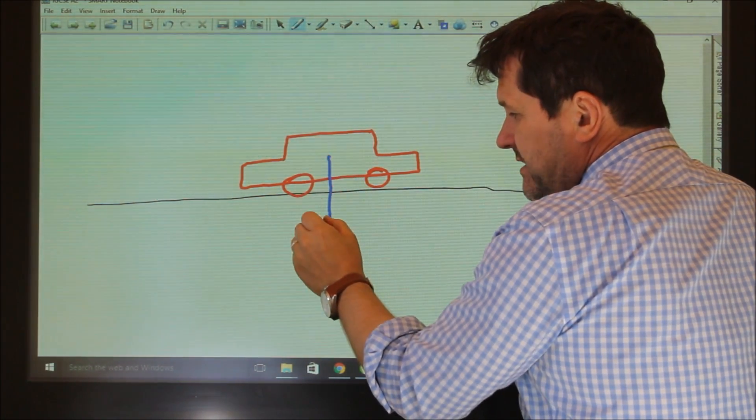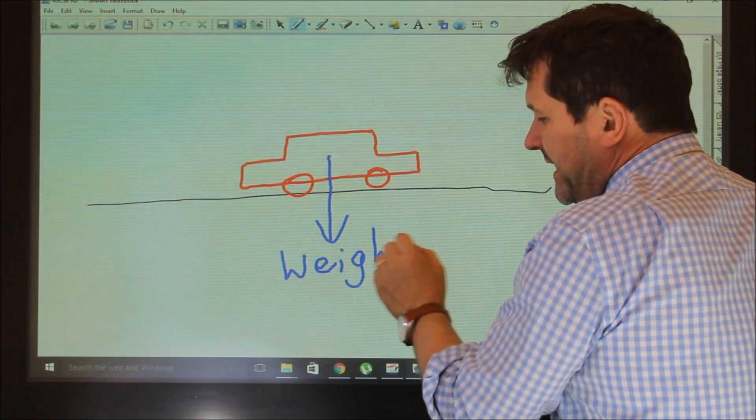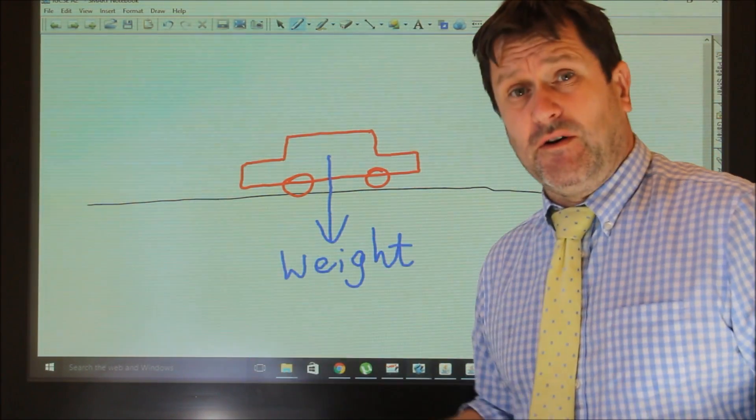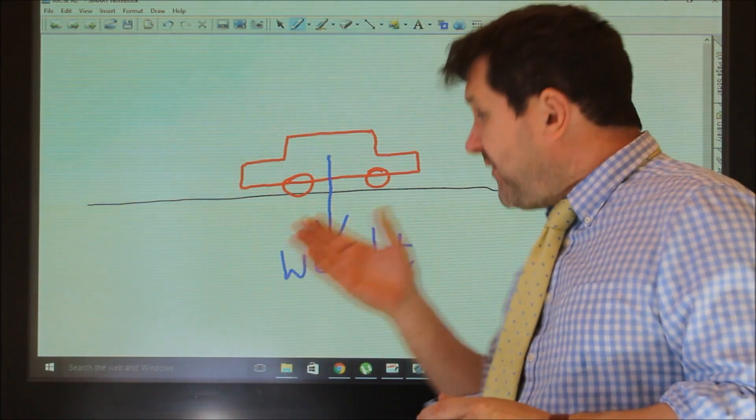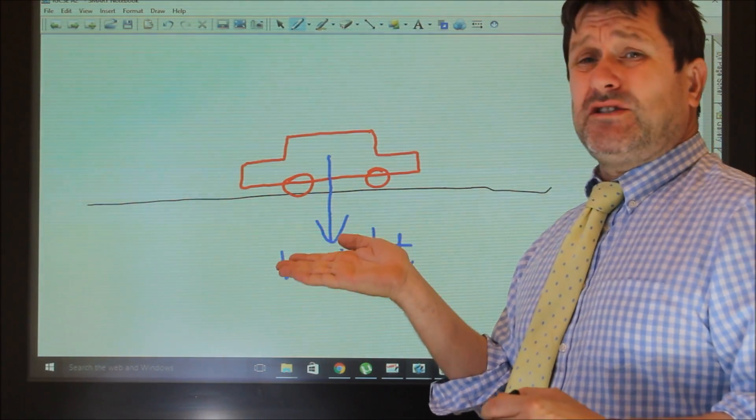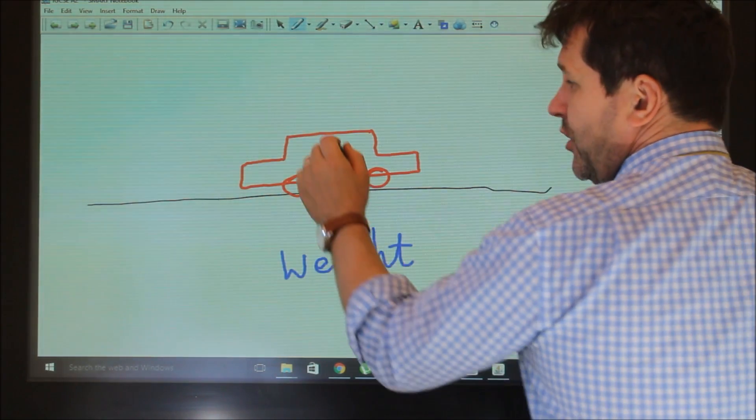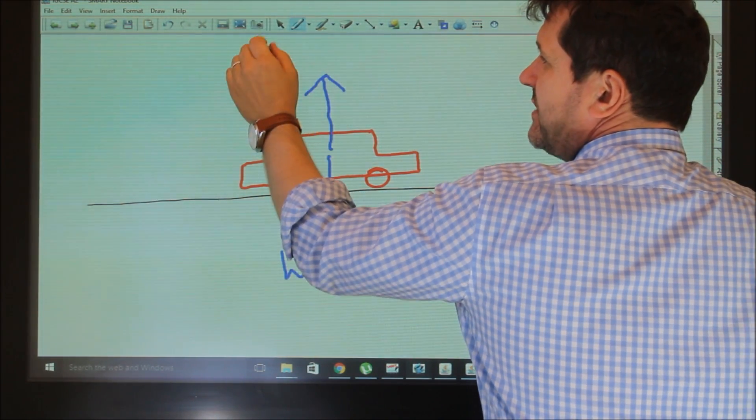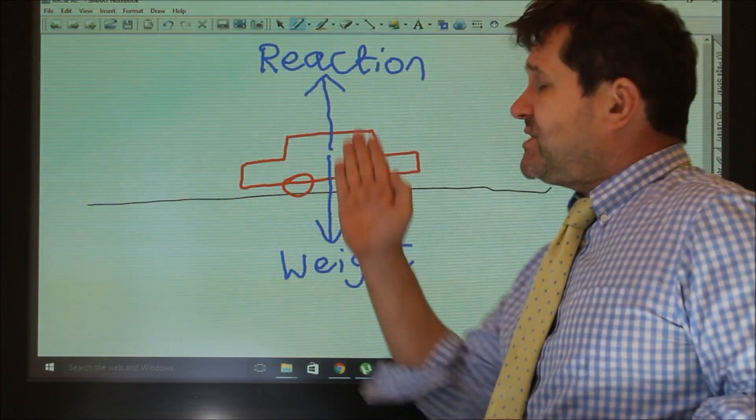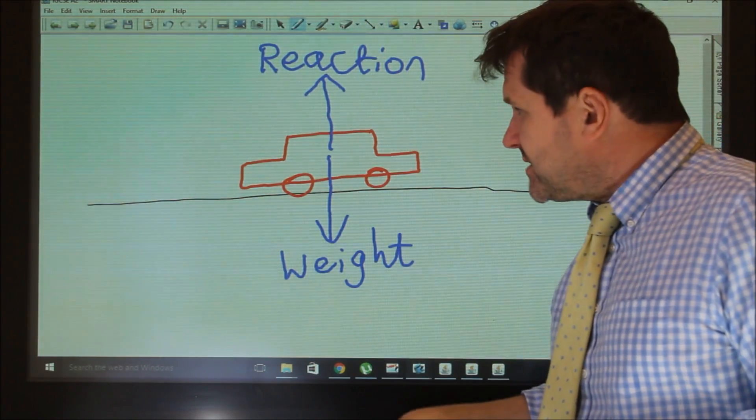The car's weight always acts downwards. So the car has a weight, which is a force. Now, the car should then go through the floor, but it doesn't. And it doesn't because the floor pushes upwards on the car. And that force, in order for the car to not go up or to go down, those forces must be balanced. So the force up, now it's actually called a reaction force.